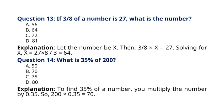Question 14. What is 35% of 200? A. 50, B. 70, C. 75, D. 80. Explanation: To find 35% of a number, you multiply the number by 0.35. So, 200 multiplied by 0.35 is equal to 70. So the correct answer to question 14 is option B. 70.